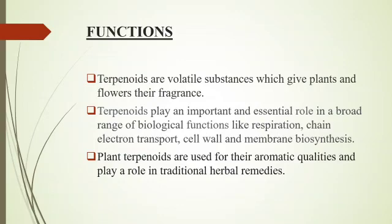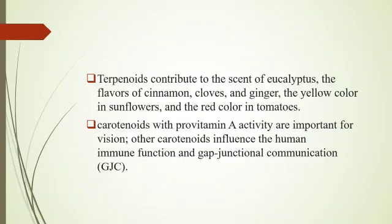The functions of terpenoids: terpenoids are volatile substances which give plants and flowers their fragrances. They occur widely in the leaves and fruits of higher plants, conifers, and citrus. Terpenoids play an important role in a broad range of biological functions such as the respiration chain, electron transport chain, cell wall and membrane biosynthesis. Plant terpenoids are used for their aromatic qualities and play a role in traditional herbal remedies. Terpenoids contribute to the scent of eucalyptus, the flavors of cinnamon, cloves, and ginger, and the yellow color in sunflowers and red color in tomatoes.